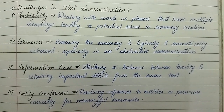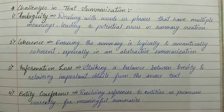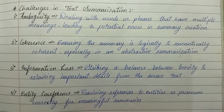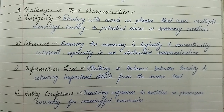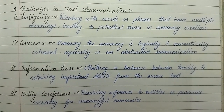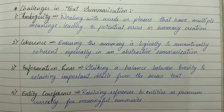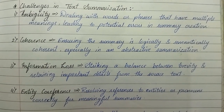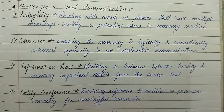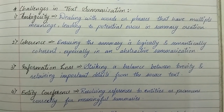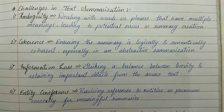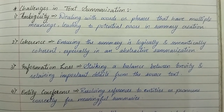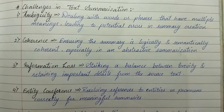Now we'll see the challenges in text summarization. First is ambiguity — dealing with words or phrases that have multiple meanings, leading to potential errors in summary creation. Second is coherence — ensuring the summary is logically and semantically coherent, especially in abstractive summarization. Third is information loss — striking a balance between brevity and retaining important details from the source text.